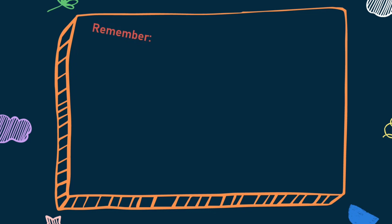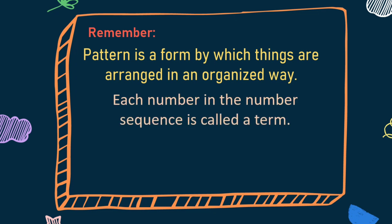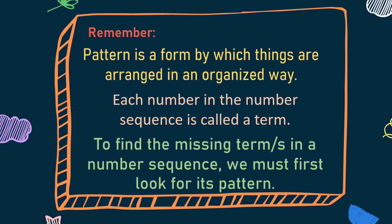Kids, always remember that a pattern is a form by which things are arranged in an organized way. Each number in the number sequence is called a term. To find the missing terms in a number sequence, we must first look for the pattern.